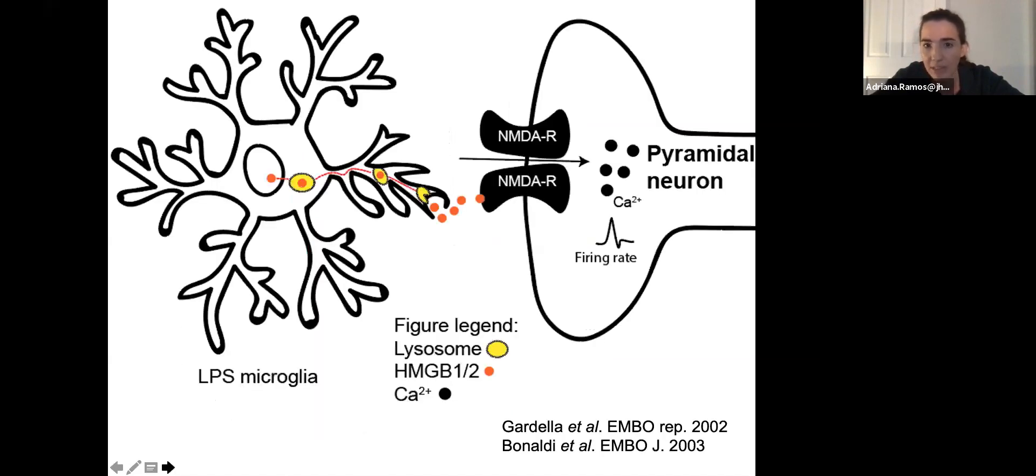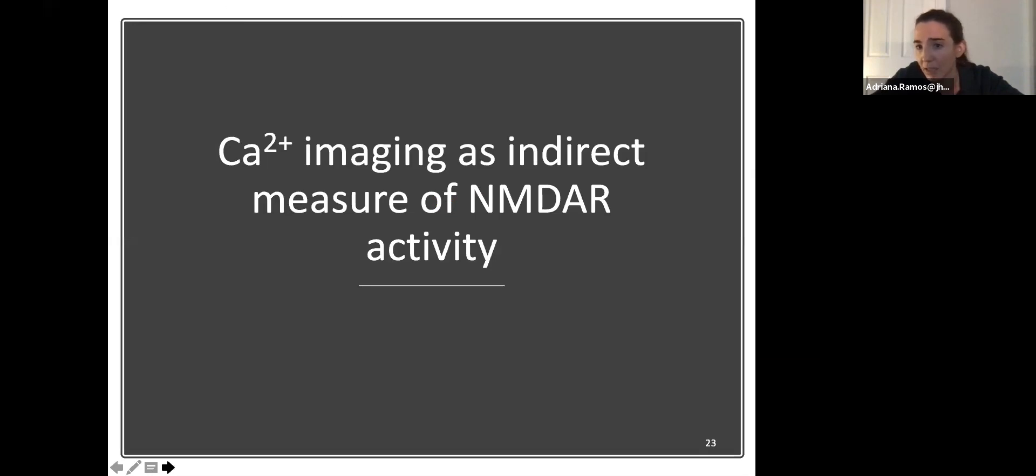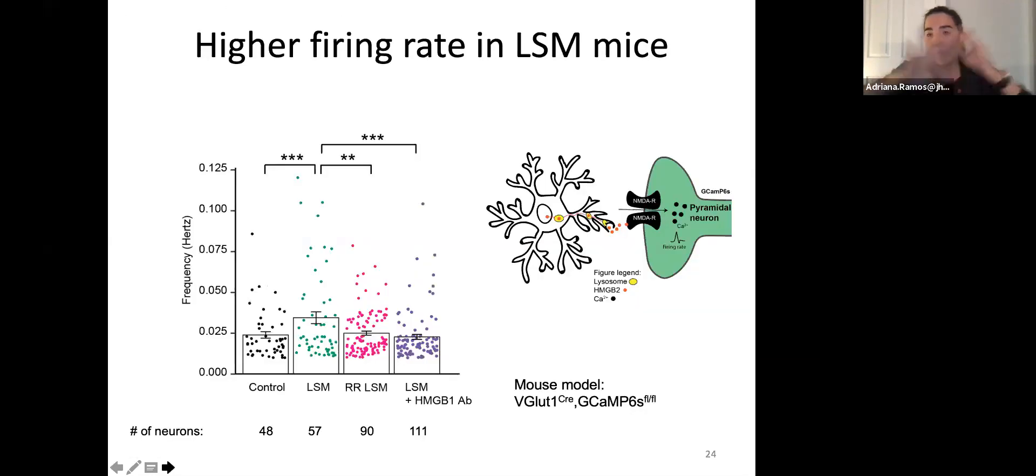Next thing was to actually test if I could see the activation of the neural cells in my system. For that I performed calcium imaging as an indirect measure of the NMDA receptors. Long story short, what we found here was that we observed an increase of the firing rate in the pyramidal neurons of the animals that were treated with LPS. We were able to revert this effect when we treat the animals with ARAR, the drug that blocks the binding between GAPDH and Siah1. But as well, in order to test causality of the HMGB proteins, we acutely treated the slides with an HMGB antibody that would theoretically block the binding between HMGB proteins and the NMDA receptors. This was successful as well and reversed the increase of firing rate we observed in the cells.